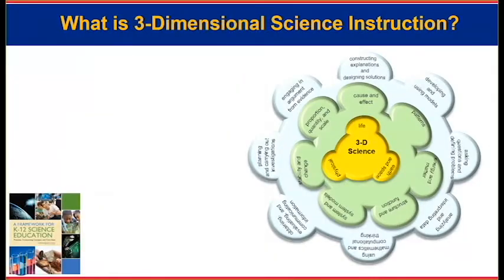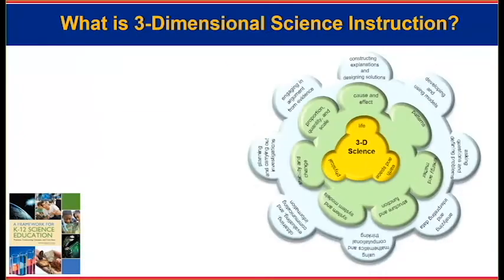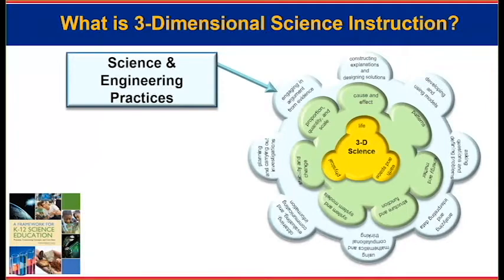The first of the three dimensions is the Science and Engineering Practices. This describes behaviors that scientists engage in as they investigate and build models and theories about the natural world, and also includes the key set of engineering practices that engineers use as they design and build models and systems. The framework uses the term 'practices' instead of 'skills' to emphasize that engaging in scientific investigation requires not only skill but also knowledge specific to each practice. There are eight of these practices.